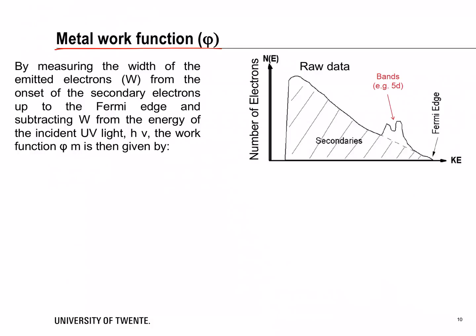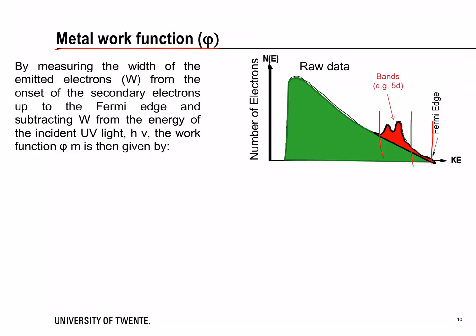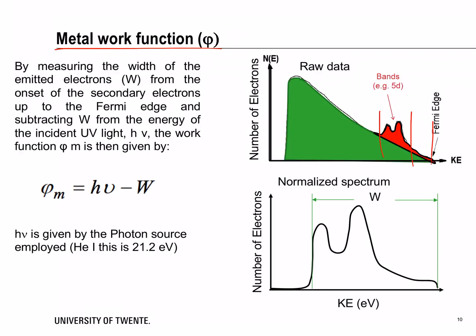We can also determine something called the work function, which is relevant for thermodynamics. The idea is to measure the width of the density of states. To do that, we subtract the inelastically scattered electrons to obtain a normalized spectrum, determine its energy width, and combine that with the energy of the photons used to bombard the sample — this gives you the value of the work function.